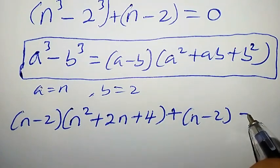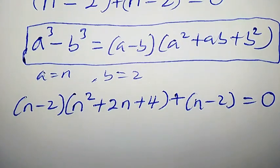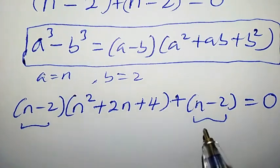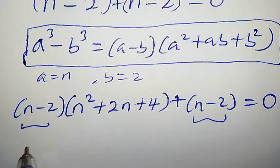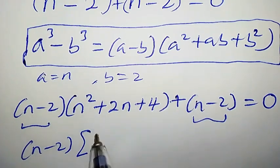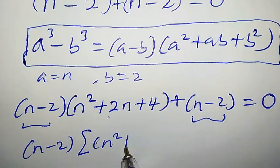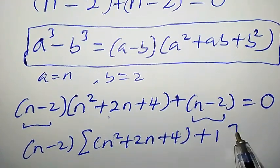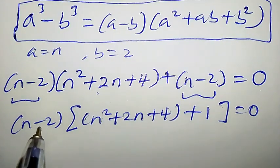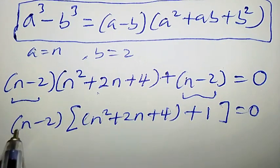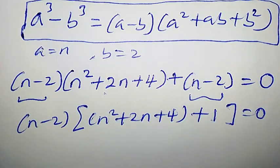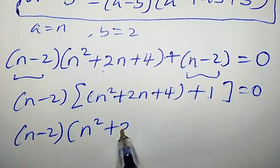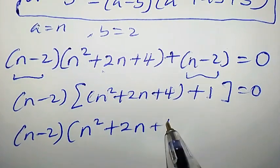We have n minus 2 here and likewise n minus 2 here, so we can pull it out. Doing that, we get n minus 2 times (n² plus 2n plus 4 plus 1) equal to 0, because n minus 2 times 1 gives back n minus 2. So we have n minus 2 times (n² plus 2n plus 5) equal to 0.